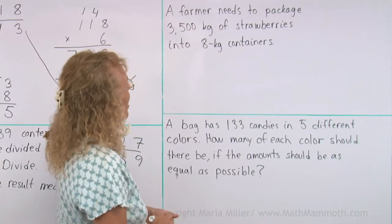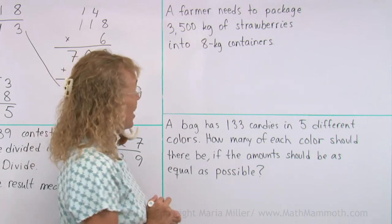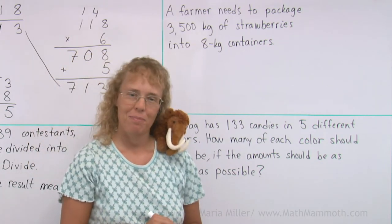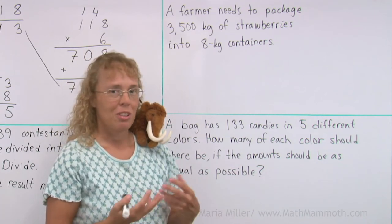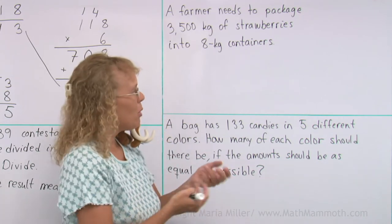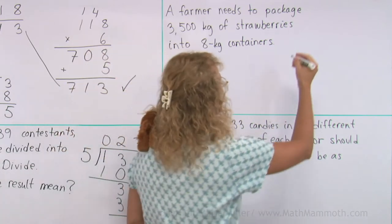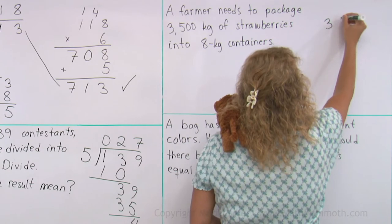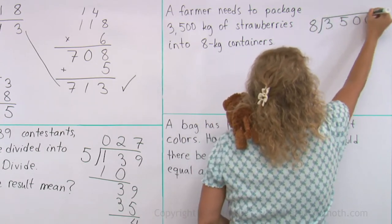A farmer needs to package 3,500 kilograms of strawberries into 8 kilogram containers. We can divide. We use long division, and we get some numbers. What will the answer mean? Again, think about that. I'm going to divide 3,500 divided by 8.